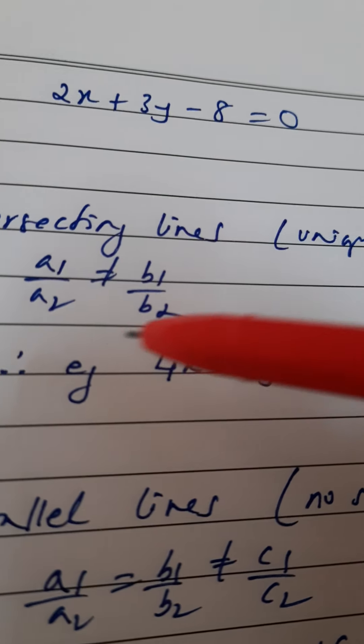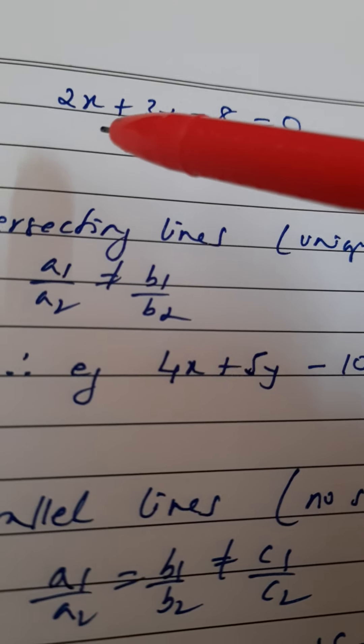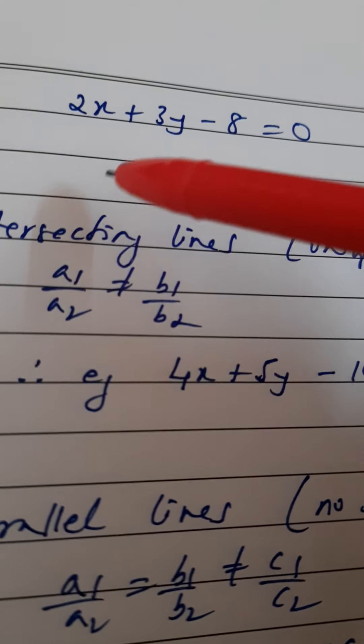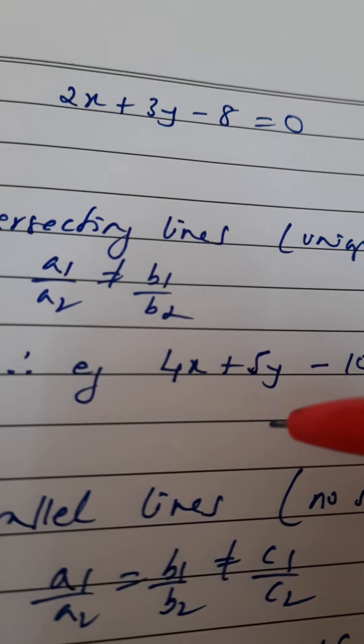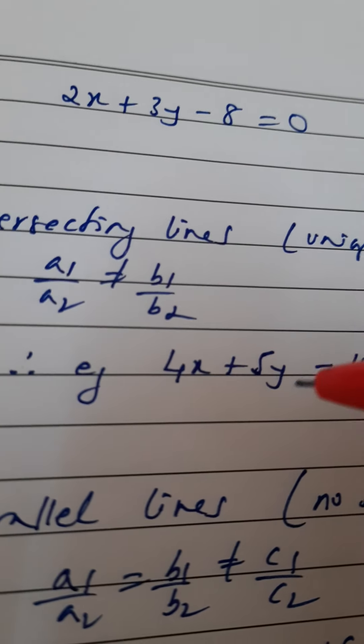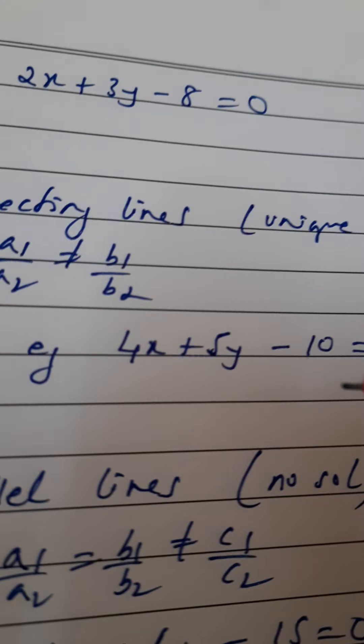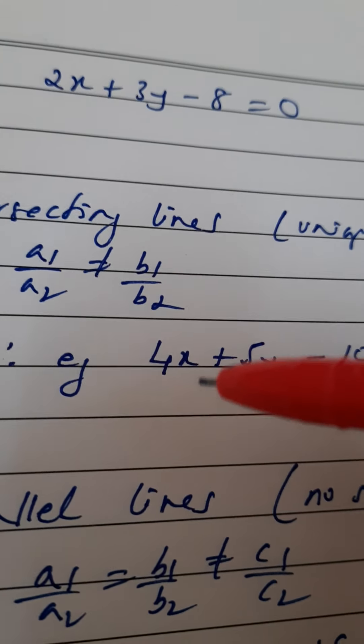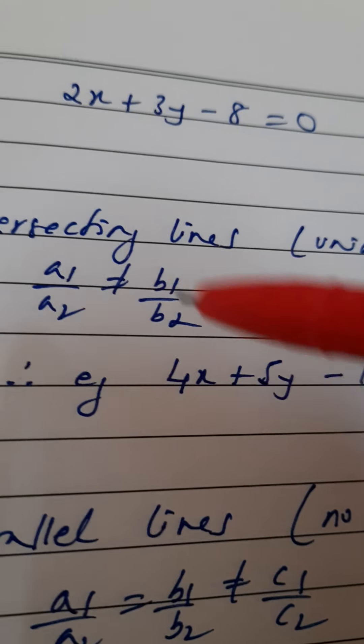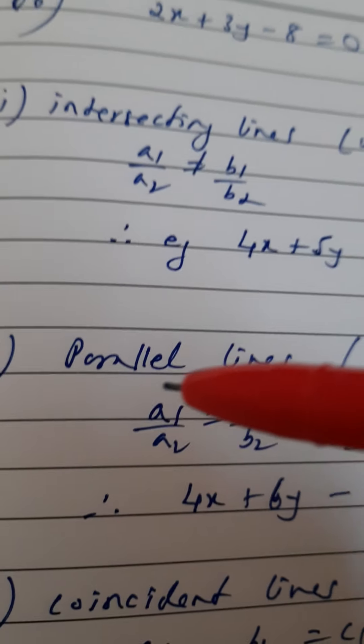So a1/a2 not equal to b1/b2. This is an example of the first part. When you solve this or if you plot this on a graph, you are going to get intersecting lines. Then the second part is we need parallel lines.